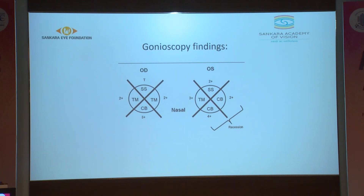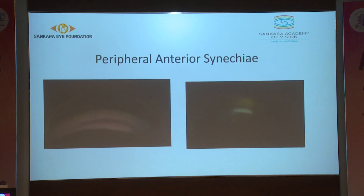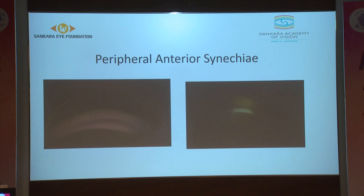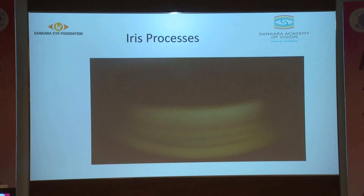Specific findings such as peripheral anterior synechiae (PAS) and trabecular meshwork pigmentation are also noted. A photograph of PAS shows that in the first picture no angle structure can be seen — this is total PAS in that quadrant. Compared to the second picture, where an angle recess is visible but the iris is stuck to the Schwalbe's baseline — this is called tented peripheral anterior synechiae. Iris processes appear as fine structures, but the angle is wide open.